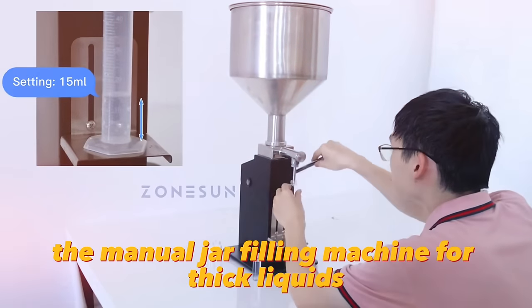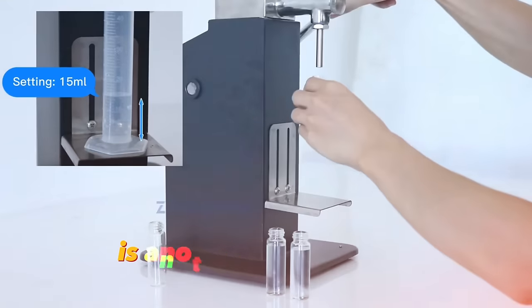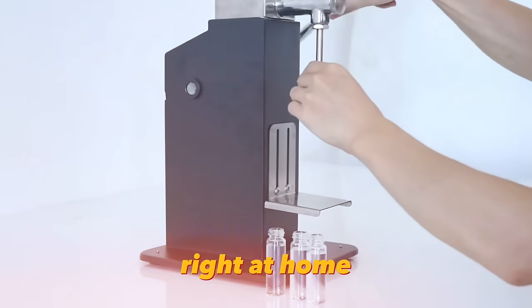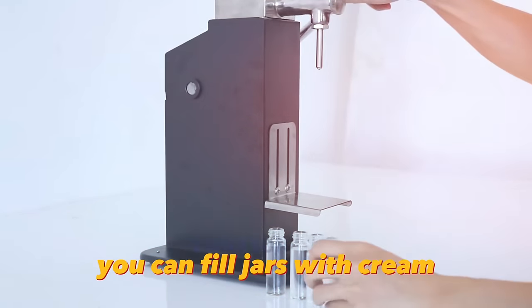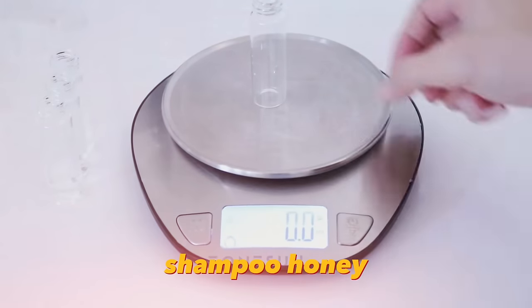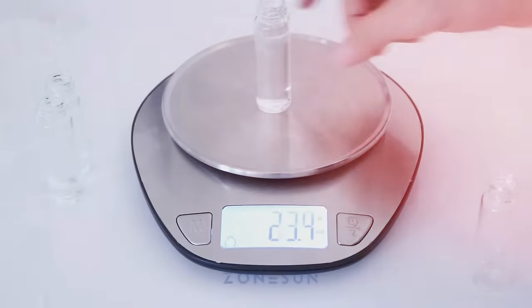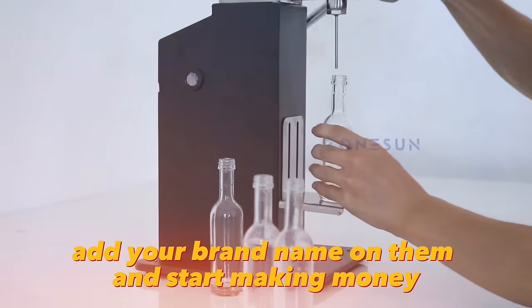The manual jar filling machine for thick liquids is another example of ultra-budget production right at home. You can fill jars with cream, shampoo, honey, and other viscous liquids. Add your brand name on them and start making money.